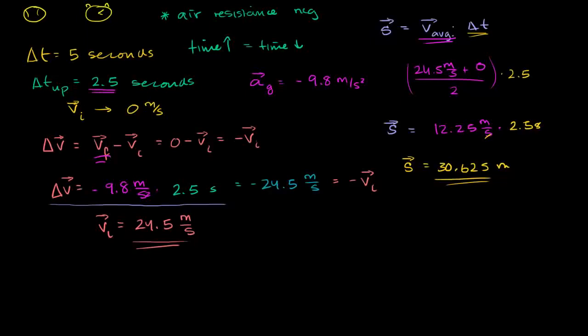I want to follow up on the last video where we threw balls in the air and saw how long they stayed up. We used that to figure out how fast we initially threw the ball and how high they went. In the last video, we did it with specific numbers. In this video, I want to see if we can derive some interesting formulas so we can do the computations really fast in our heads while playing this game out on a field without any paper around.